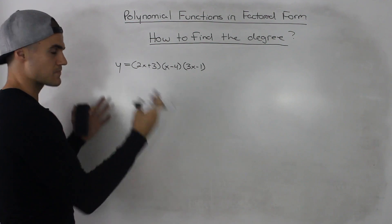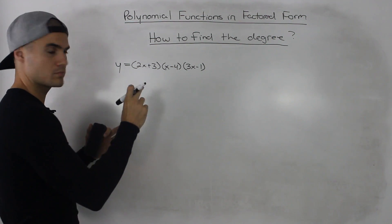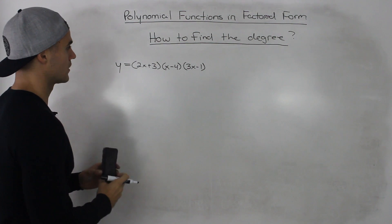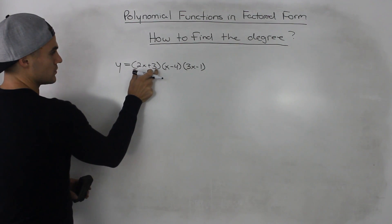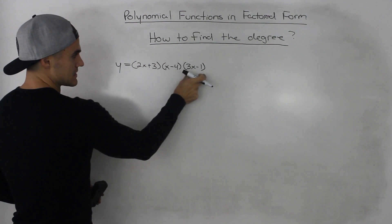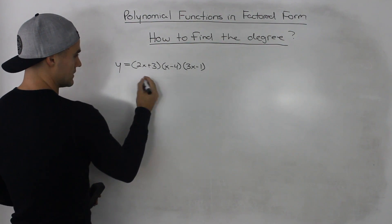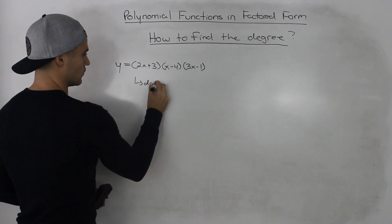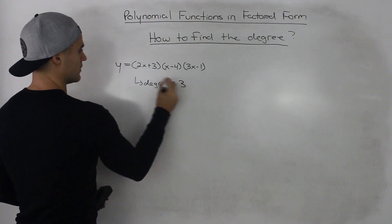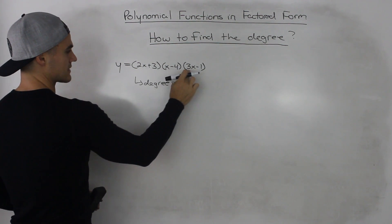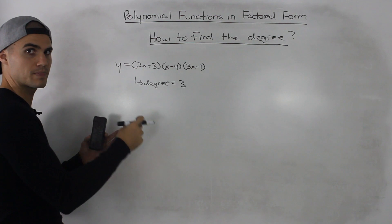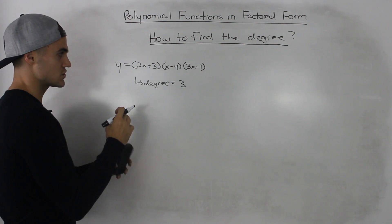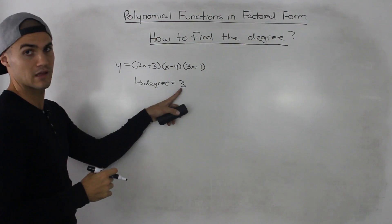If you expanded it, what would be the highest exponent attached to the x variable? What you do is you just literally count the x's in the brackets. So in this case the degree would be 3 because there's an x here, an x here, an x here. And if you FOIL it, the highest exponent attached to x would be 3.